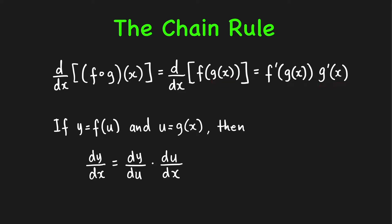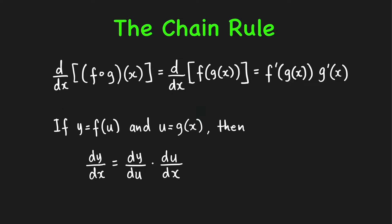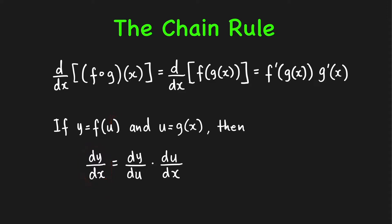This rule will let us find the derivative of complicated functions. Another way to write this rule is using Leibniz notation. If y is a function of u, and u is a function of x, then the derivative of y with respect to x — because u is a function of x, it makes sense to talk about the rate of change of y with respect to x. We find that derivative by first taking the derivative of y with respect to u, and multiplying it with the derivative of u with respect to x.